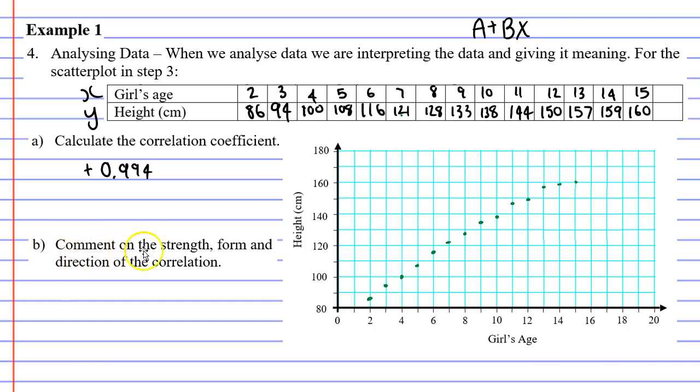Question B says comment on the strength, form, and direction of the correlation. So for the strength, we're going to write very strong. It's almost 1, so it's a very strong relationship. For the form, at the moment, it looks linear. So for now, we're going to say linear, but the question we've got to ask ourselves is this. If I went beyond 15 years of age, would it remain linear? And we'll talk about that a bit later, but for now, we'll just say linear. It also wants us to talk about the direction of the correlation, and it's positive. It's going uphill.